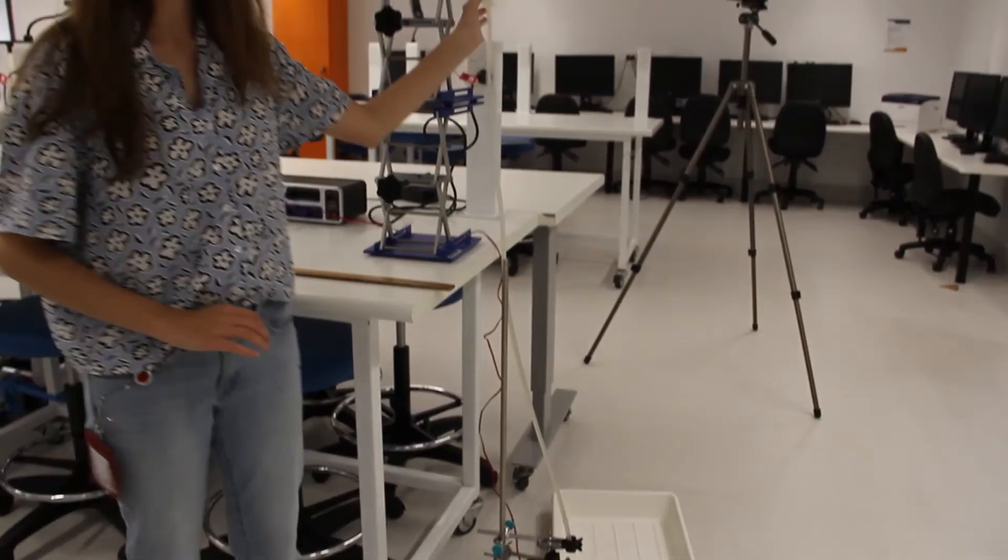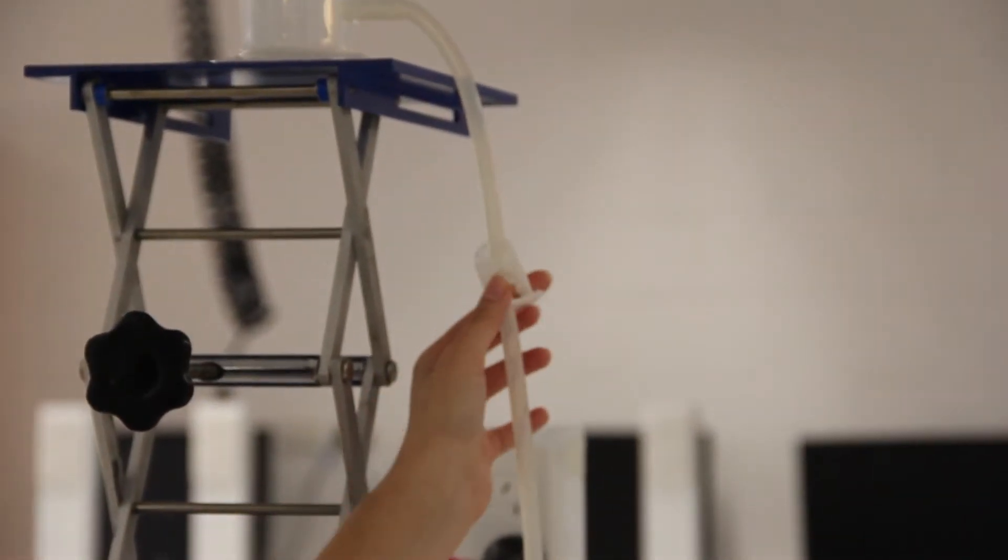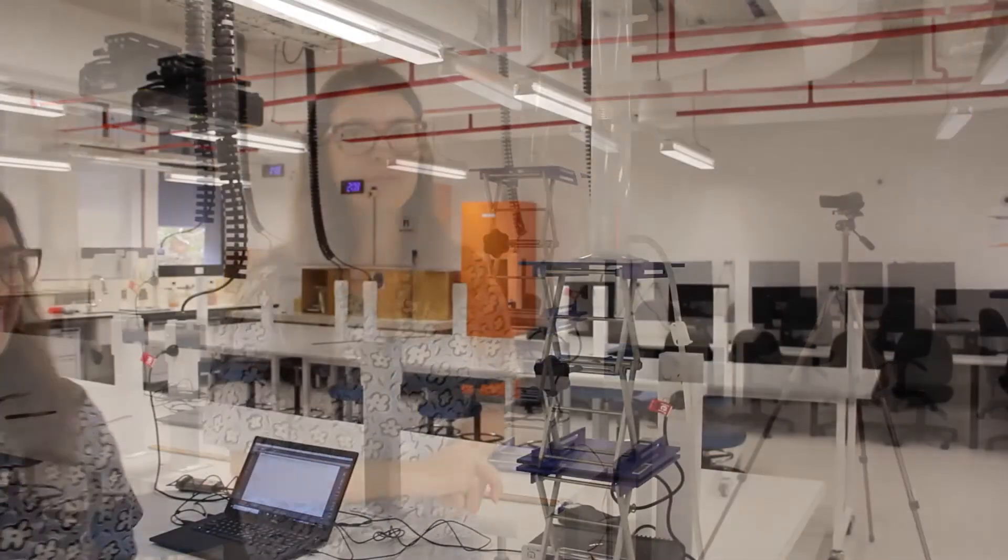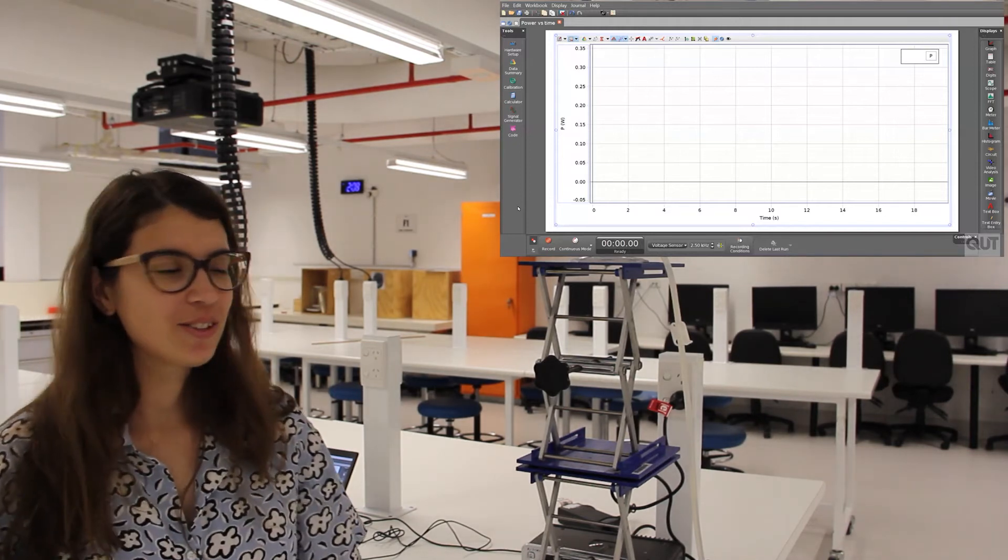We have a clamp that avoids the water flow. And when we are ready to start, we are going to open this clamp. The water will flow and we are going to measure on the computer the energy produced. Once we got all of the parameters, we are ready to start the experiment.